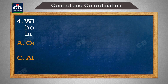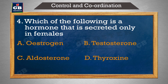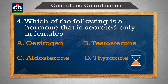Which of the following is a hormone that is secreted only in females — in mein se kaunsi hormone hai jo kewal mahilaon mein sravit hoti hai: a) estrogen, b) testosterone, c) aldosterone, d) thyroxin.